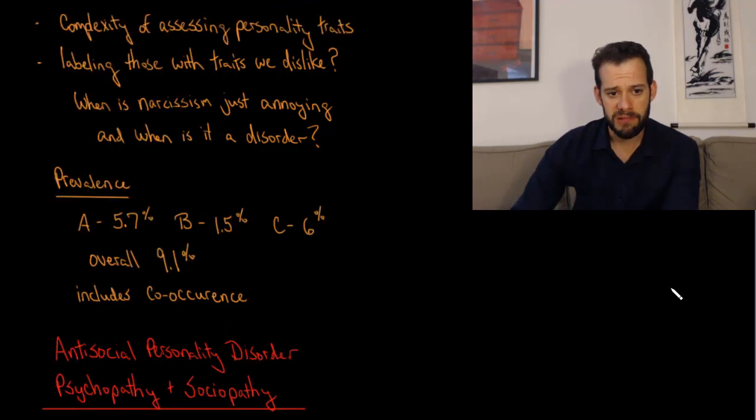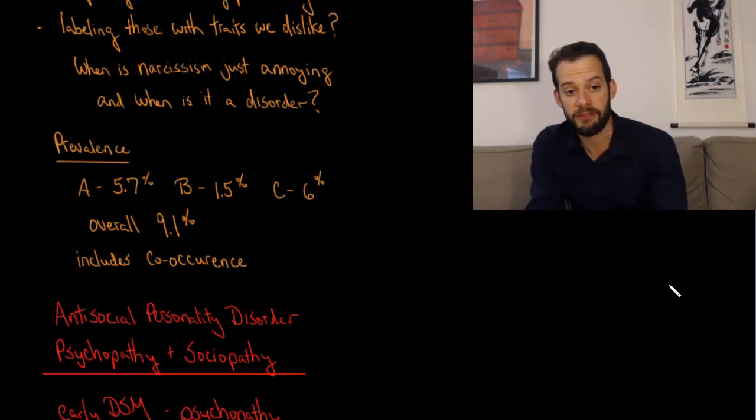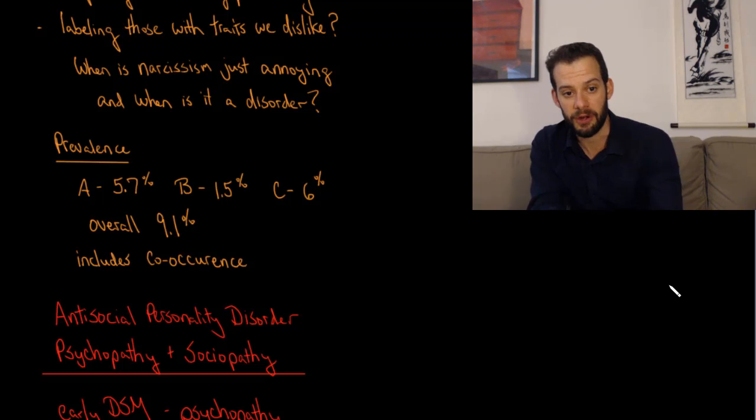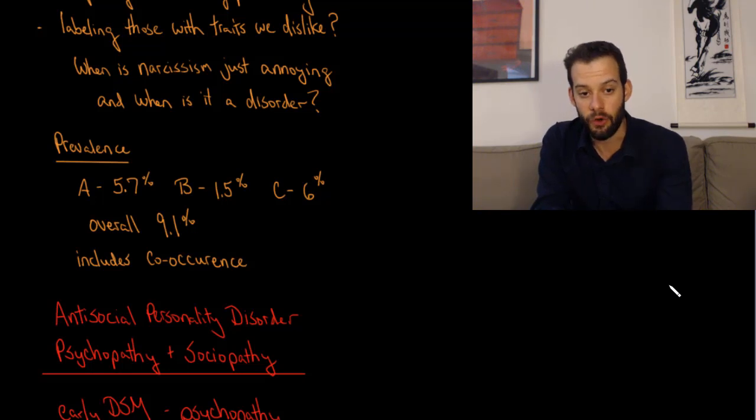We can also look at the prevalence of personality disorders and see for cluster A it's about 5.7%, cluster B it's about 1.5%, and cluster C is about 6%, but the overall prevalence is about 9.1%. And this brings back an important point that I talked about in a previous video, which is that prevalence rates are not additive. So you might look at that initially and think that the total prevalence must be around 13%, but of course it's a bit lower than that. The reason it's a bit lower is that this includes co-occurrence or comorbidity, and that means that there are people who are receiving more than one personality disorder diagnosis.